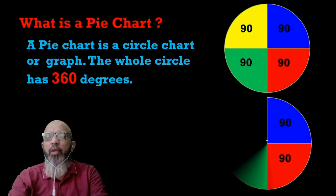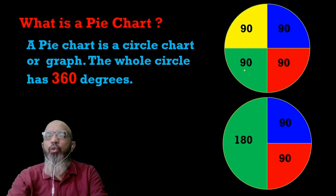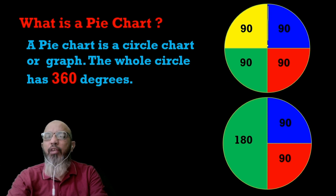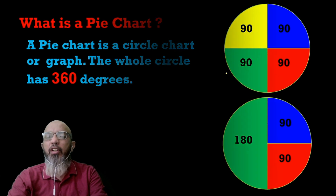The whole chart shows 360 degrees — as you know, the angle at one point is 360. If we divide it into four equal parts, then each part shows 90 degrees. Similarly with percentage: a complete circle shows 100 percent. So let's start some questions — you will enjoy these questions and it is very interesting.